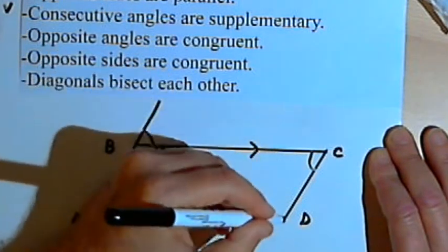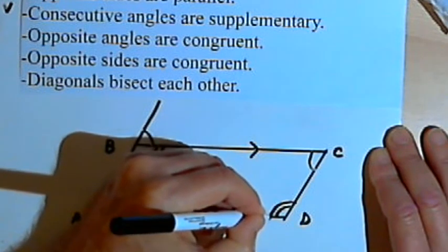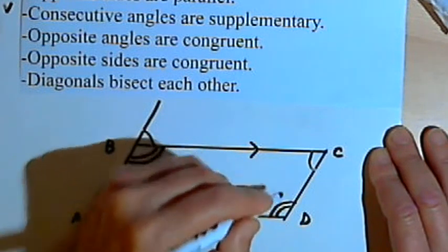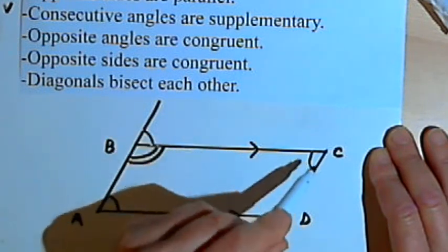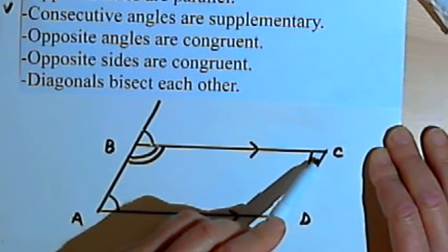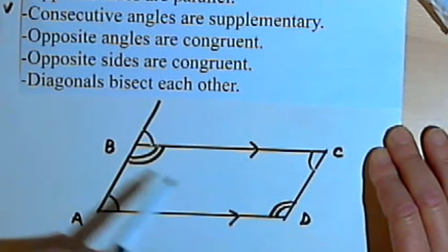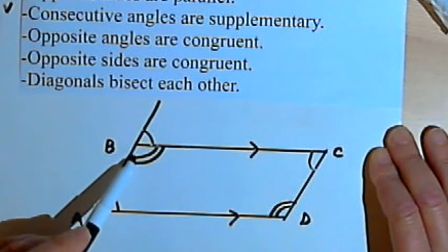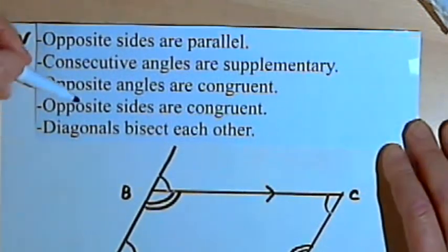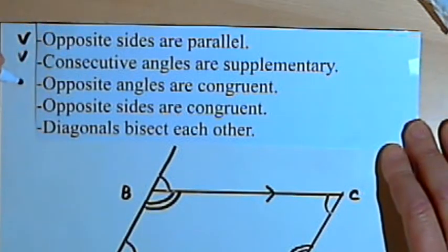We can prove the same thing for angle D. We can show that because D is supplementary to angle C, it must be congruent with angle B. So there we've got a proof that the opposite angles are congruent.